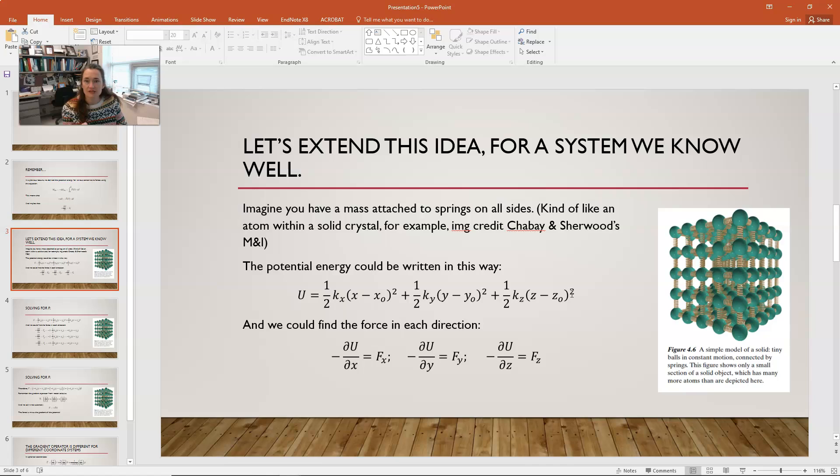Now, x naught, y naught, and z naught would be the equilibrium coordinate of your atom. And then, any displacement from that, of course, would cause a force in that direction. Now, what force? Well, we could find the force in each direction using this potential energy.